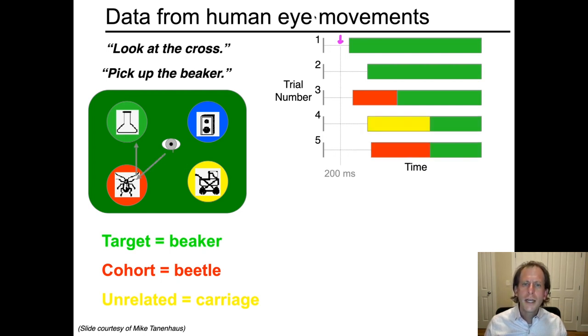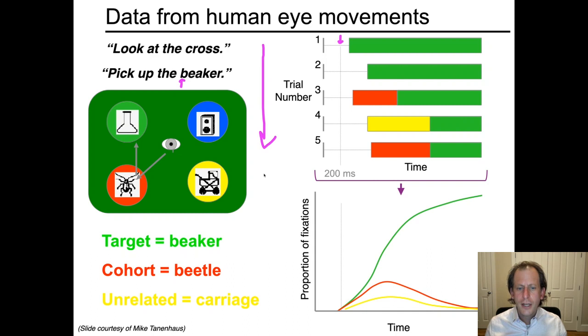So what we'll get is over a large number of trials like this, each trial will give us a time course as a function of how long has elapsed from the beginning of the word 'beaker.' The eyes will be in any of a number of places, and no color means that the eyes have not entered any of the four areas of interest. Then what's done is that these numerous trials are aggregated to a proportion. So at any particular time slice, what proportion of the trials are the eyes in any of the four areas of interest?